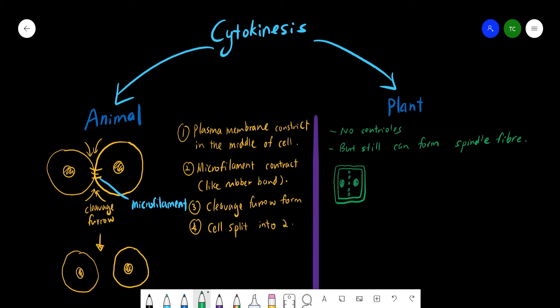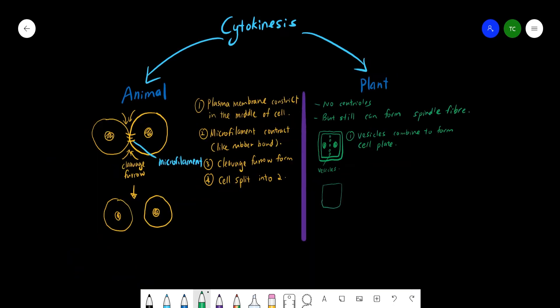Next will be the plant cell. It actually has no centrioles, but it still can form spindle fibers anyway. With the cell wall outside and two nuclei in between, there's what we call the vesicles. So the vesicles contain carbohydrates which are important for the formation of the cell wall. Vesicles will actually combine to form the cell plate.